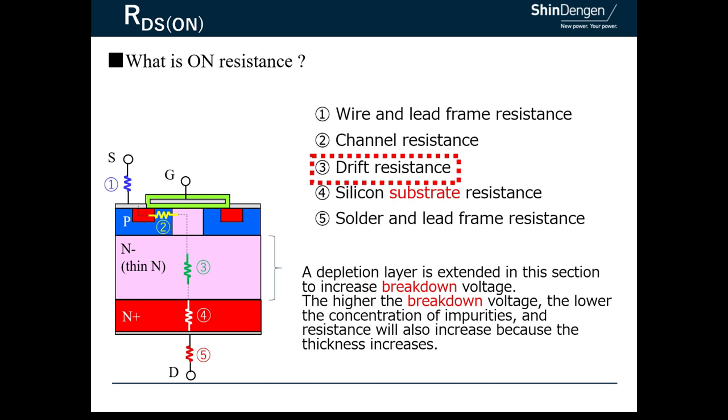The RDS(ON) and breakdown voltage are in an exponential inversely proportional relationship. Therefore, the drift layer resistance determines most of the RDS(ON) in a high voltage MOSFET.